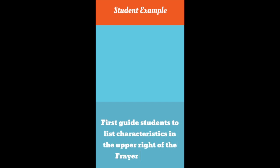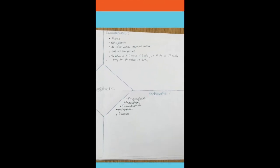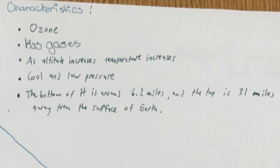We suggest that you guide students to first list characteristics of this word in the upper right-hand corner of the Frayer model. Some of the words the student listed are ozone, has gases, and altitude increases, temperature increases.